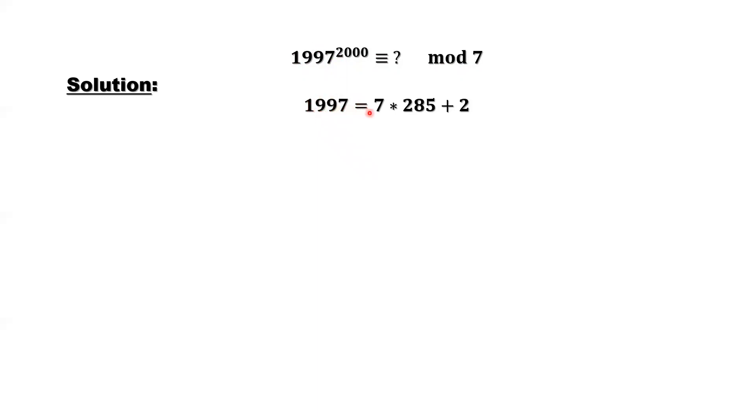1997 equals 7 times 285 plus 2. The question is this: to find the remainder of this, it's equivalent to find the remainder of 2 to the power 2000 divided by 7.